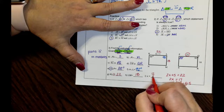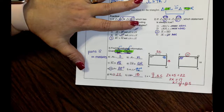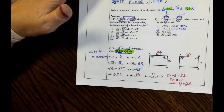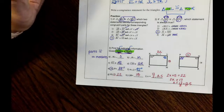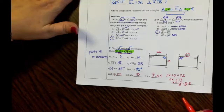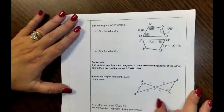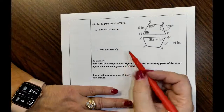Both 17/2 and 8.5 are good answers. With congruency you don't set up proportions — that's for similarity. The corresponding parts are equal to each other, so you set them equal. Try the next problem on your own and pause the video.